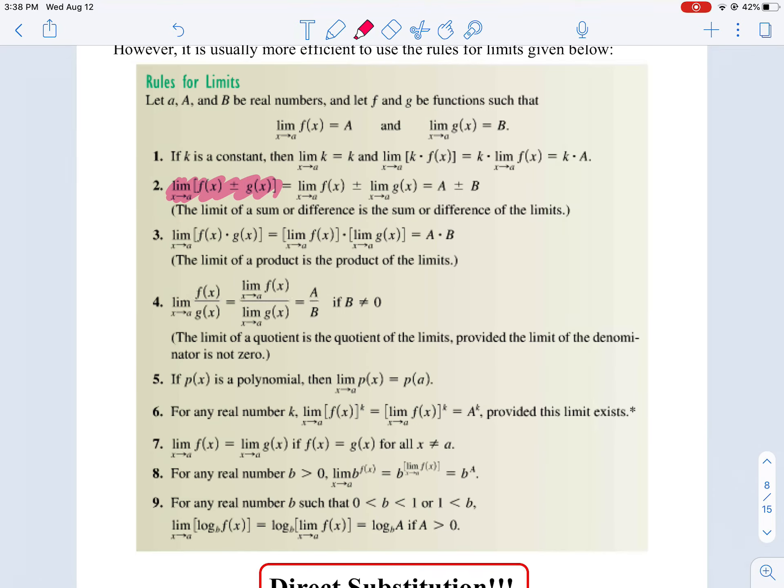If I have the limit as X approaches A and I have two pieces added together, instead of doing the two pieces added together and then applying the limit, I can do the limit of the first piece, I can do the limit of the second piece, and then I can simply add those two answers together.